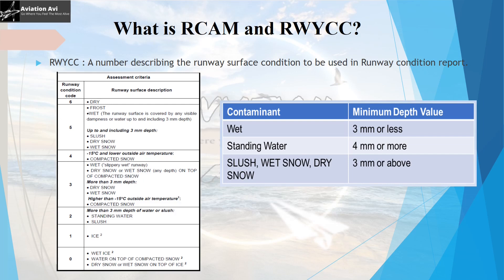Now let us understand the meaning of the most commonly used terms — the runway condition code and the RCR. The runway condition code is a number describing the runway surface condition and is used in RCR. Numbers from 0 to 6 are used as the runway condition code. 6 refers to a dry runway. 5 refers to a runway contaminated by frost or wet with contaminant depth of 3 mm or less, where the contaminant may be slush, dry snow, or wet snow. You can read the contaminant type and runway condition code accordingly.